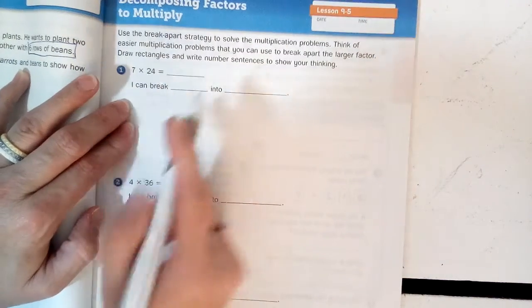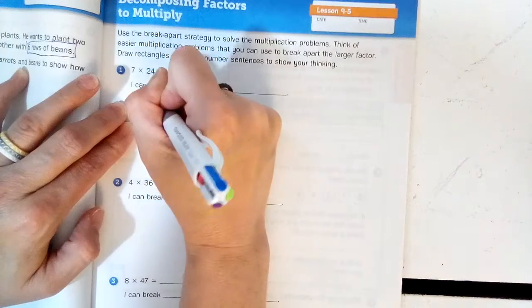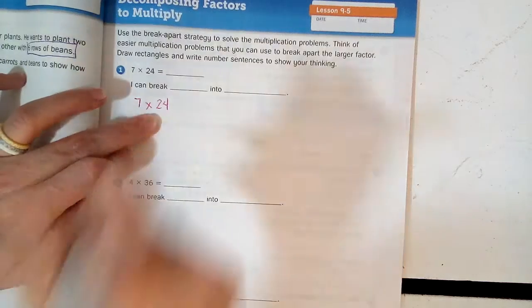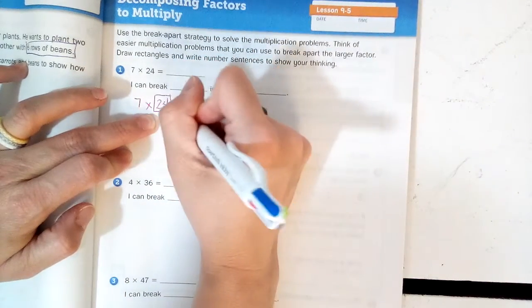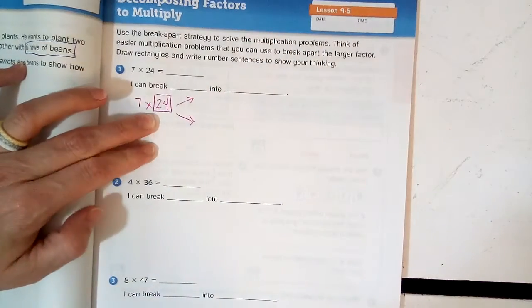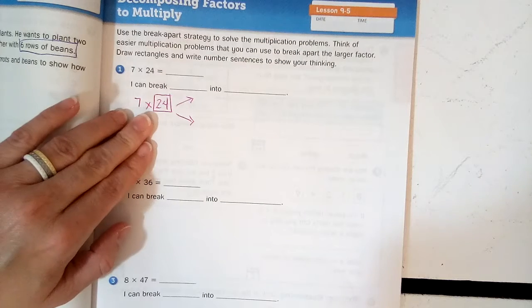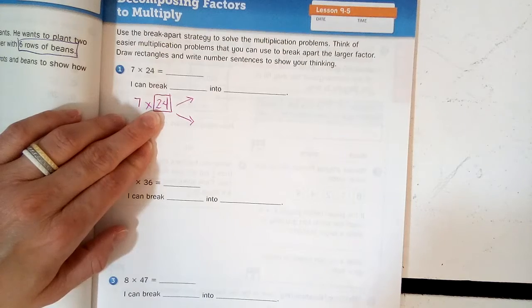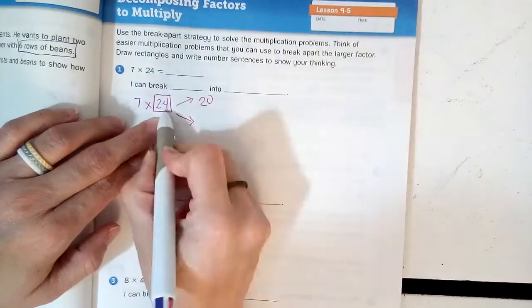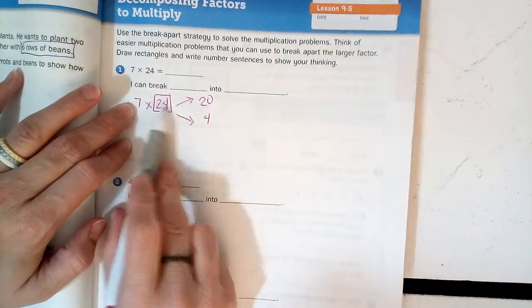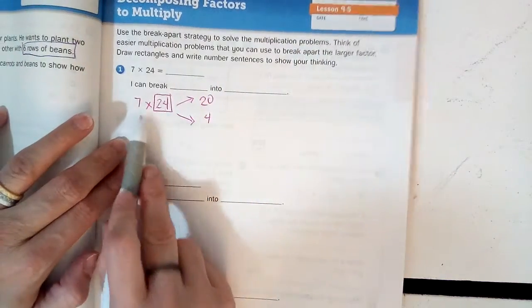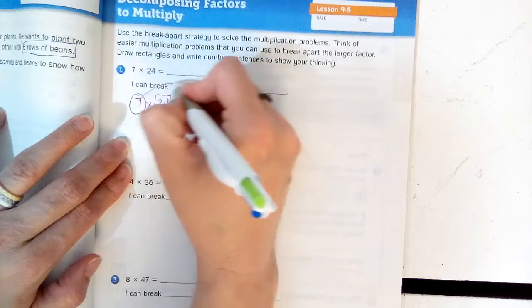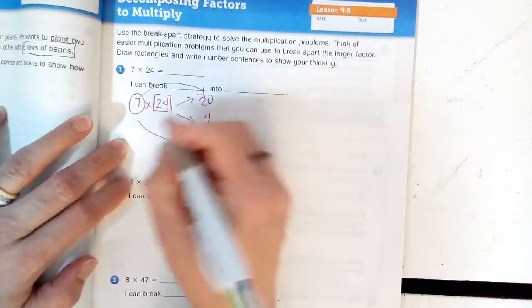So the problem is 7 times 24. Sevens I'm good at doing, but this 24 I should break up. Let's break it up by place value. What is in the tens place for 24? If you said 2, you're right. 2 tens is the same as 20 and 4 ones. So 24 is the same as 20 plus 4. So I can make a new problem down here to do 7 times 20 and 7 times 4 like this.